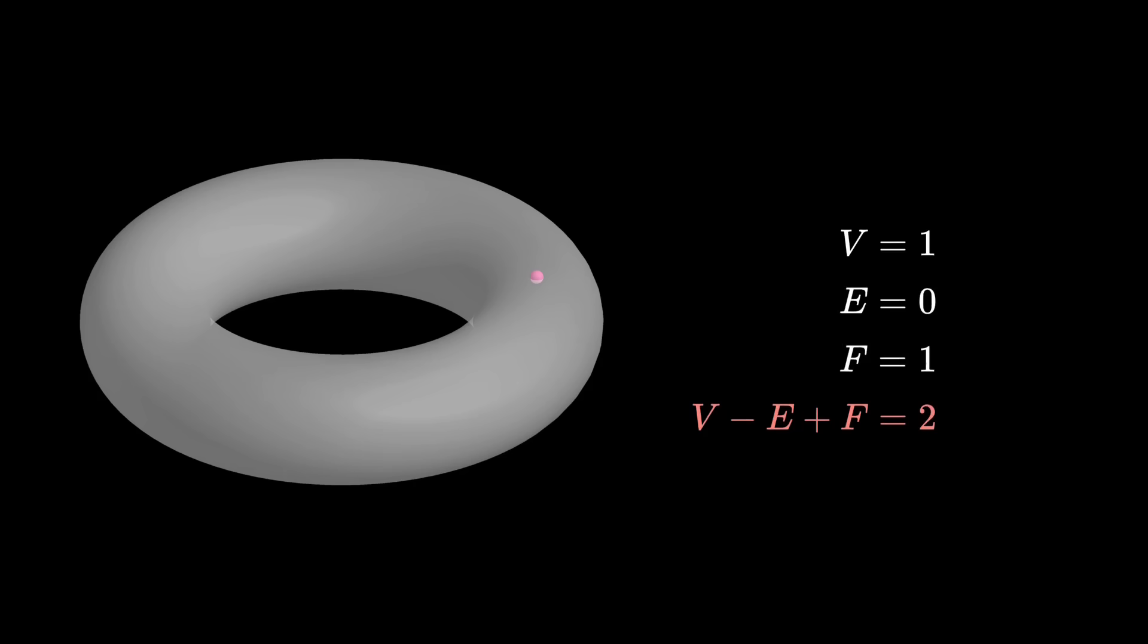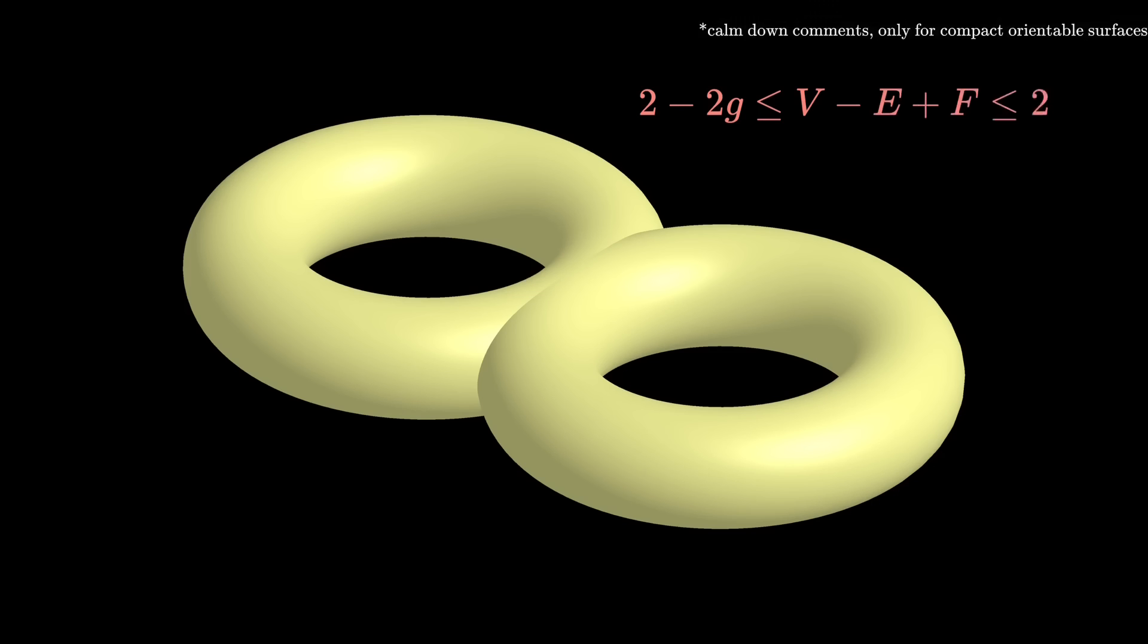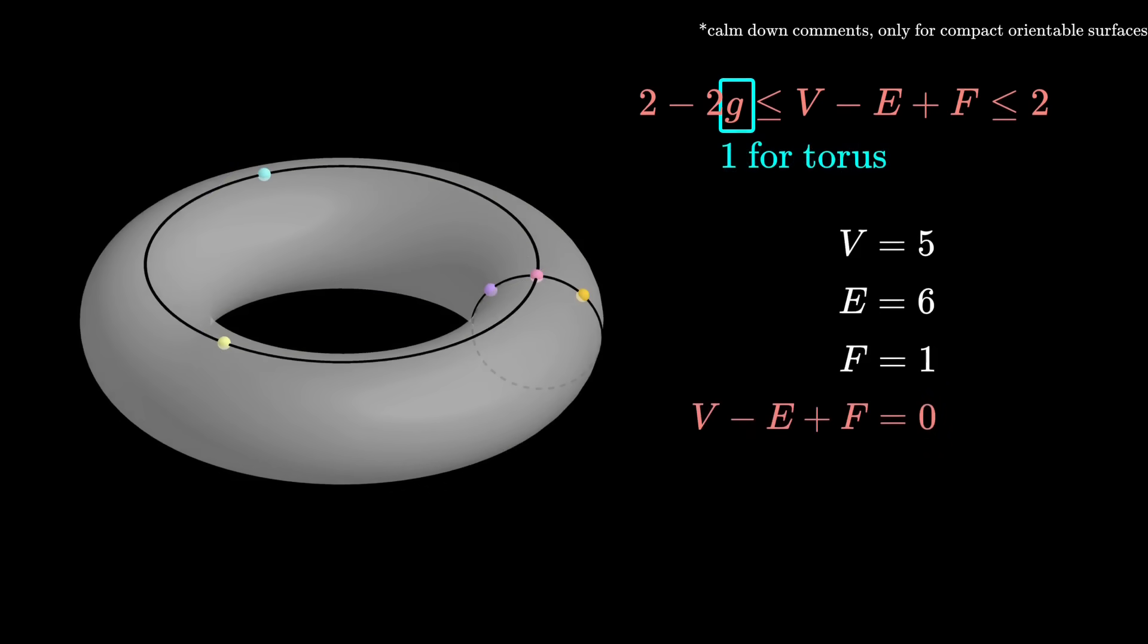In general, V minus E plus F is between 2 minus 2G and 2, where G is known as the genus, or very roughly the number of holes on the surface. For example, the genus of this double torus is 2, because there are two holes in it. The torus has G equals 1, because there is just one hole.